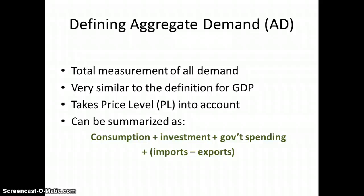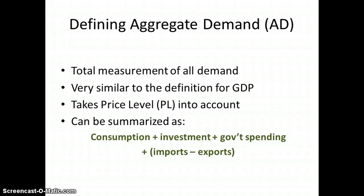First things first, when we define aggregate demand, it's a similar definition to GDP. We could take all household consumption, all firms' investment, all government spending, and the difference between what a nation imports versus what a nation exports, and come up with at any point in time an aggregate demand output. So usually how we define it is total demand in an economy when we take into account all households, all firms, the government, and the rest of the world in terms of one nation's imports and exports.